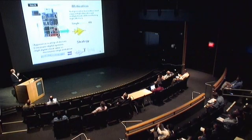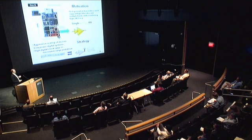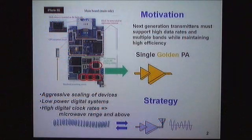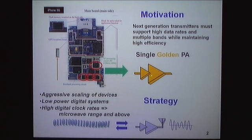Our motivation is that the next generation of transmitters must support high data rates, as Verizon and Nokia told us, while maintaining high efficiency because users will use them all the time. Instead of having four PAs as seen on an iPhone 3G, we will have one PA that is broadband and can sustain a wide variety of operating conditions.